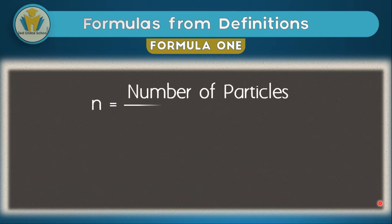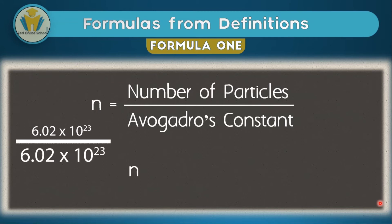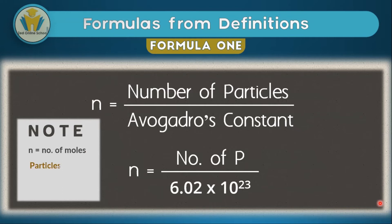In the first formula, we talked about number of particles. We said a mole is an amount of substance equivalent to 6.02 times 10 to the power 23. Now, N, which is the mole, is equal to number of particles divided by Avogadro's constant. Because if we get 6.02 times 10 to the power 23 of any compound, we have one mole — dividing that number by Avogadro's constant gives us 1. So: N equals number of particles divided by 6.02 times 10 to the power 23. Note that N is for the number of moles, and the particles can be atoms, ions, molecules, or electrons.